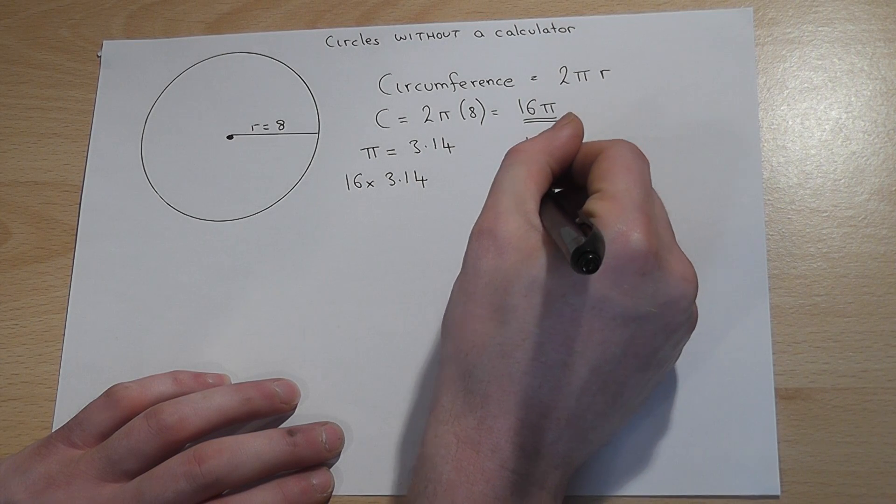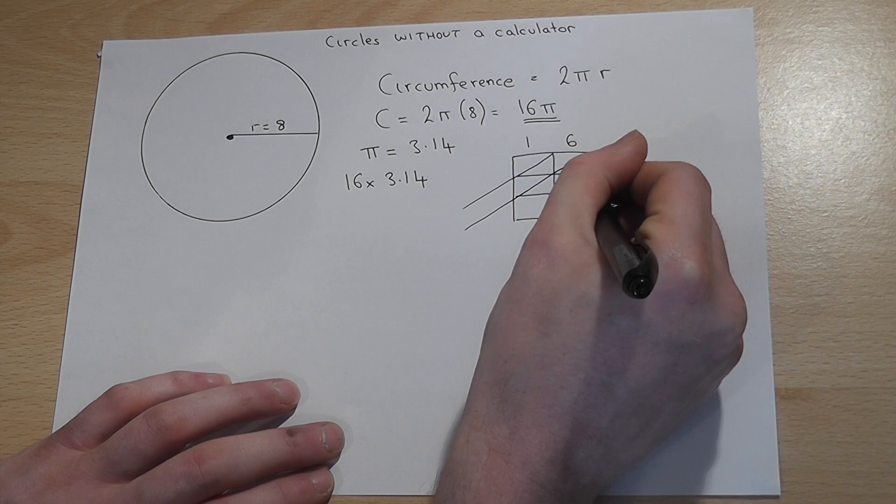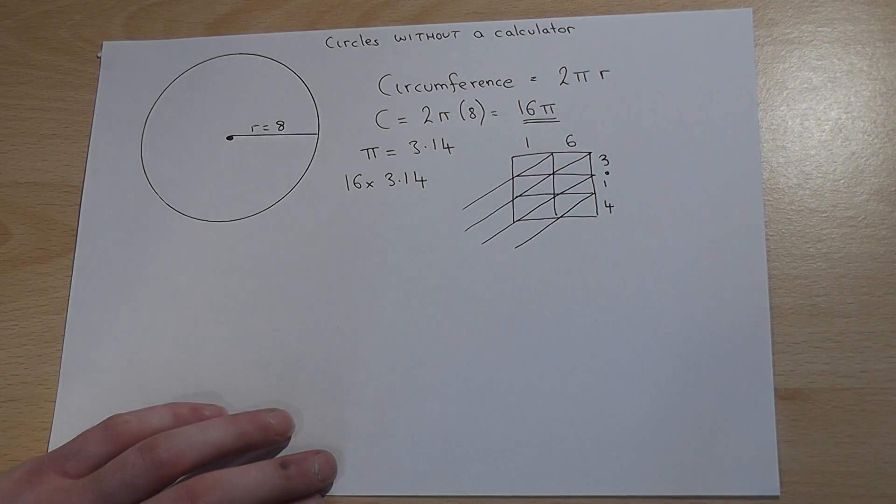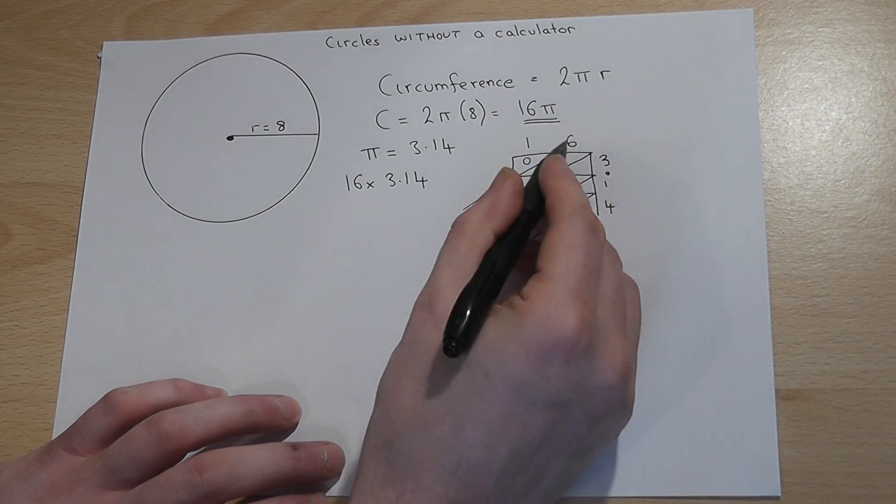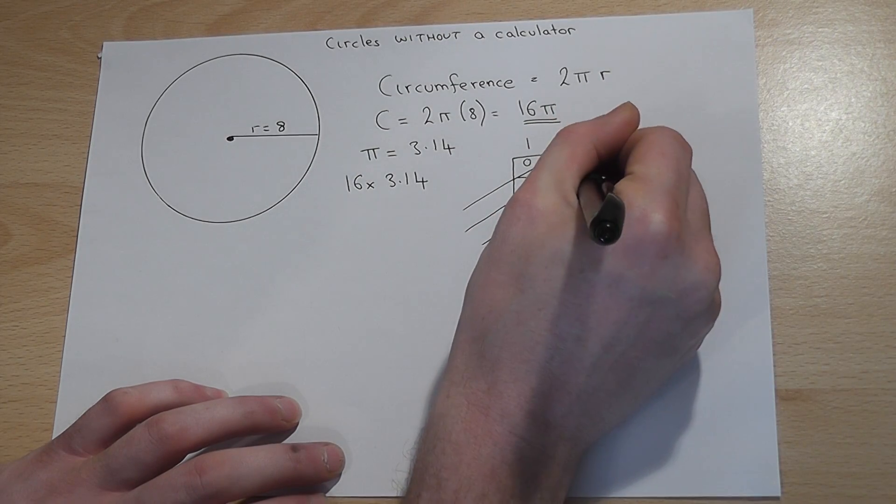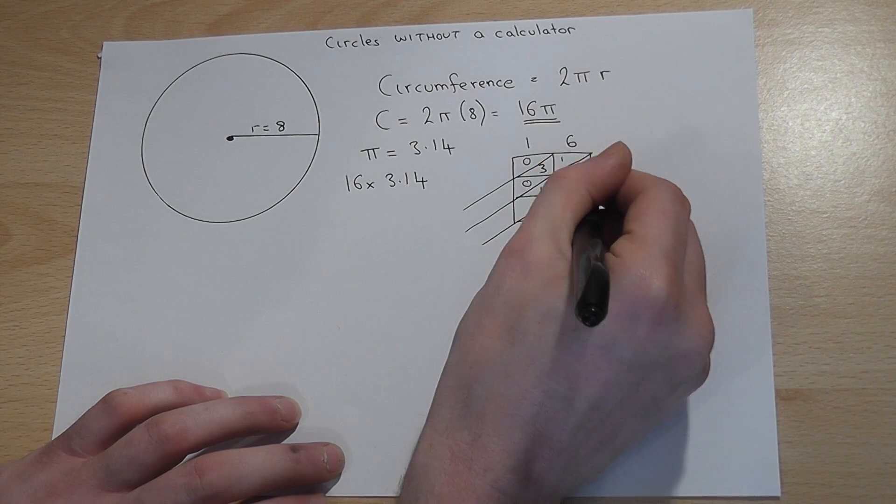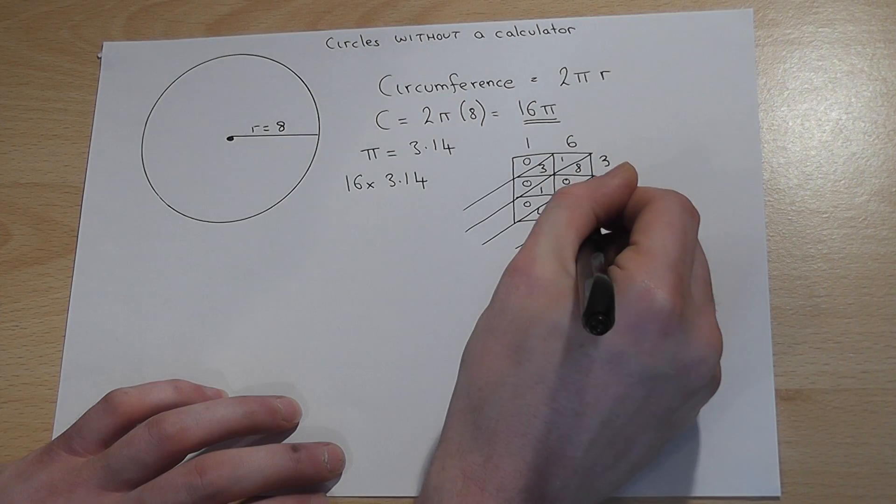You draw lines down through the corners of the grid. Now then, 1 times 3 is 3, 6 times 3 is 18, 1 times 1 is 1, 6 times 1 is 6, 1 times 4 is 4, 6 times 4 is 24.